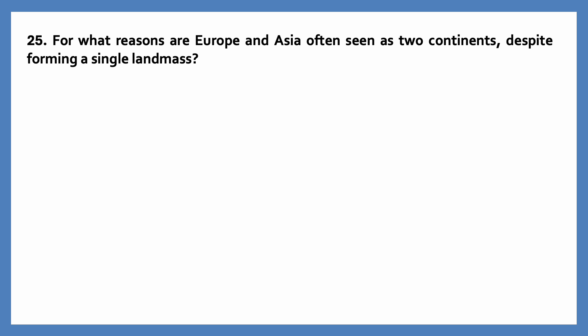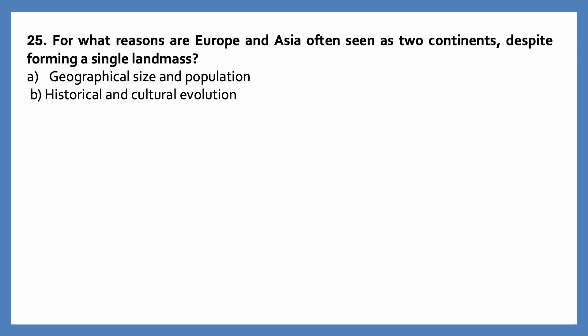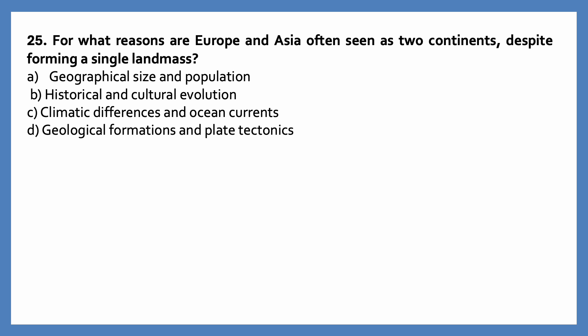For what reasons are Europe and Asia often seen as two continents, despite forming a single landmass? Options are: geographical size and population; historical and cultural evolution; climatic differences and ocean currents; geological formations and plate tectonics. The correct answer is historical and cultural evolution — for these reasons, Europe and Asia are often seen as two continents.